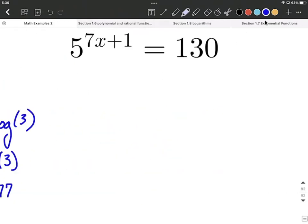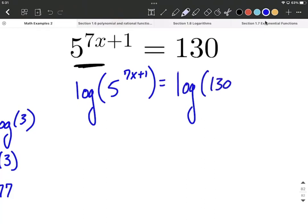One more, probably the most difficult we're going to see here. We already have everything that the exponent is attached to on one side, so we don't have to do those preliminary steps to rearrange and isolate the exponential part. Instead, I'm going to jump right in to apply a logarithm to both sides, and I'm choosing the common logarithm in this case. So common log of 5 raised to the 7x plus 1 equals common log of 130.